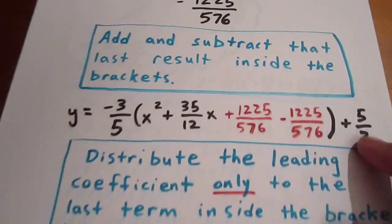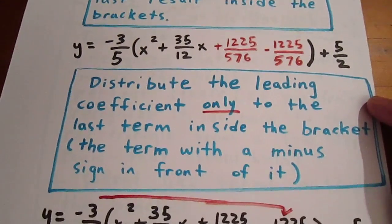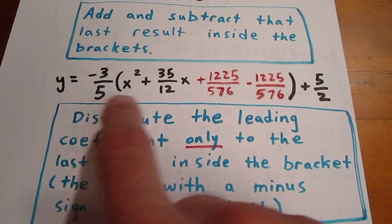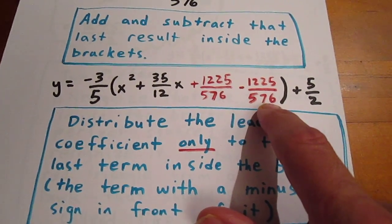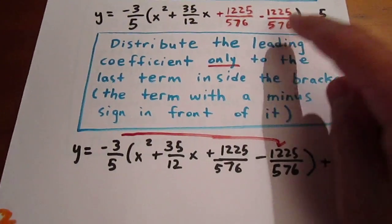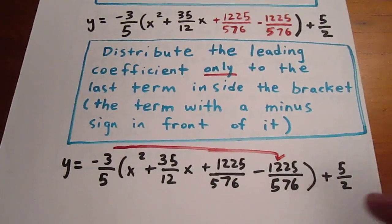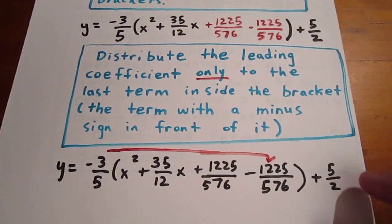We're then going to distribute the leading coefficient only to the last term inside the bracket. So, this negative 3 fifths will multiply the negative 1225 over 576. This will allow us to kick that out of the bracket.